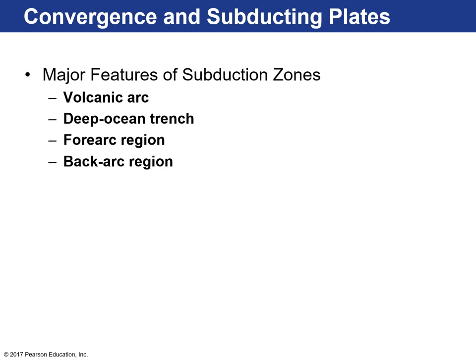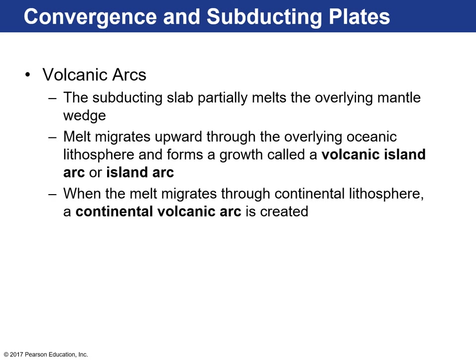Let's talk about subduction zones. Subduction zones are a convergent plate boundary where compressional forces dominate, and mountains can be built in these environments. There are four major features of a subduction zone: the volcanic arc, where magma generated in this region may reach the surface; the deep ocean trench where we have the subducting ocean plate; the forearc region between the trench and the volcanic arc; and the backarc region behind the volcanic arc.